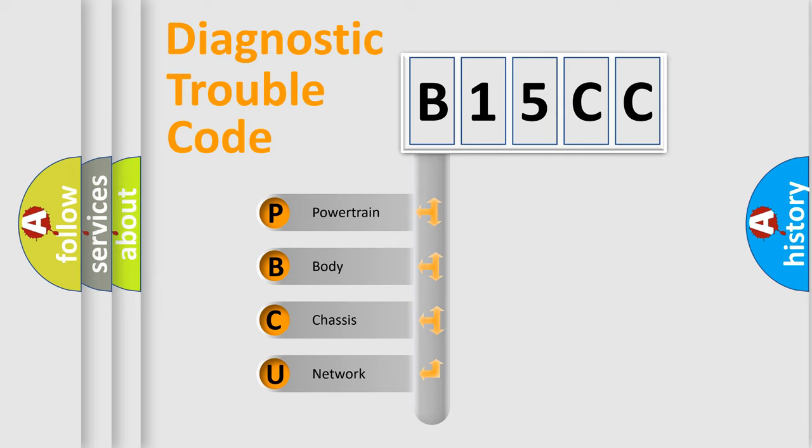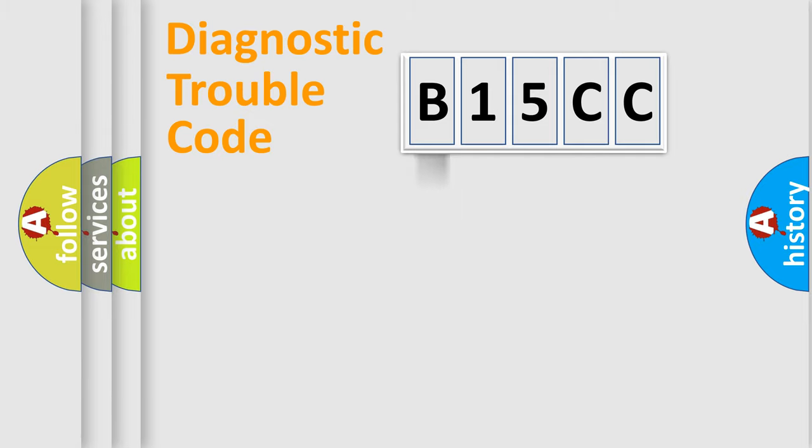We divide the electric system of the automobile into four basic units: powertrain, body, chassis, and network. This distribution is defined in the first character code.